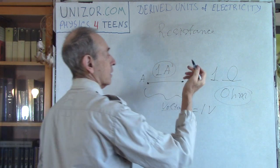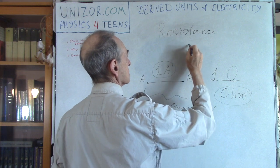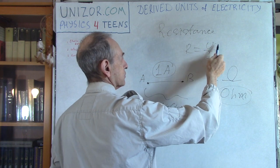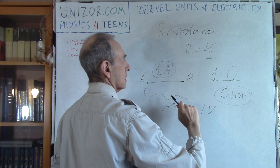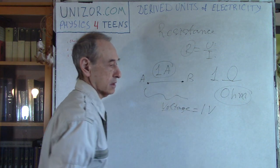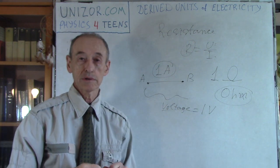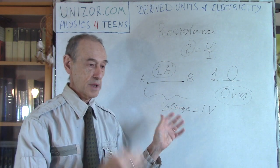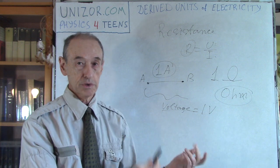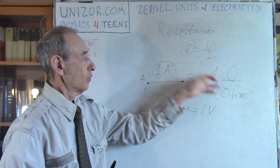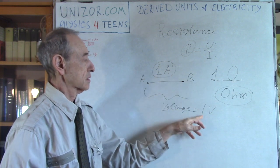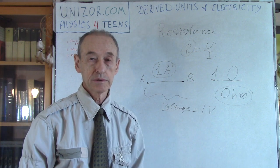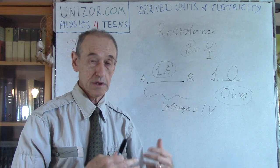This is basically Ohm's law: R equals U over I, where U is the voltage, I is the current, and R is the resistance. The unit of the ohm comes from the unit of current and the unit of voltage — it's all hierarchically built, one unit defined based on whatever has been already defined before. That's how all of mathematics is built: axioms, then theorems based on axioms, then theorems based on previous theorems, and so on. Same in physics — new concepts and units are introduced based on what was already established.